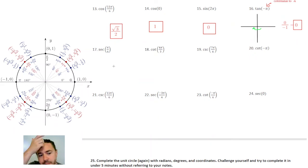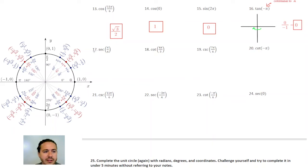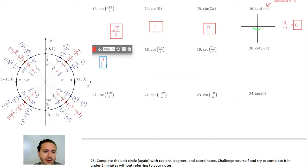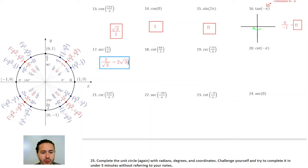Now we're starting to deal with those reciprocal functions. It looks like these last eight problems ask you to find reciprocals. Secant is the reciprocal of cosine. At π over 6 the x value is √3/2, so the reciprocal of that would be 2 over √3. If you rationalize that, it would be 2√3 over 3.